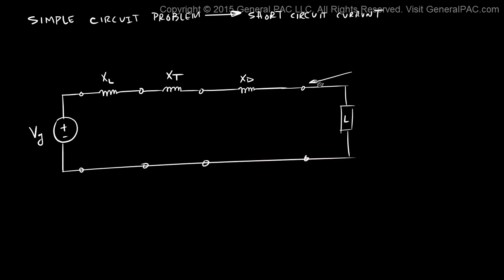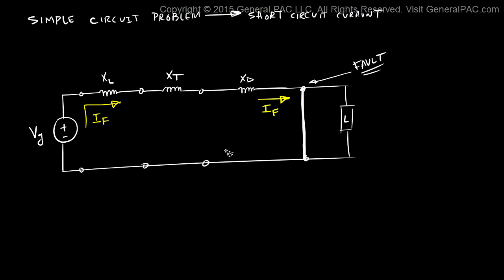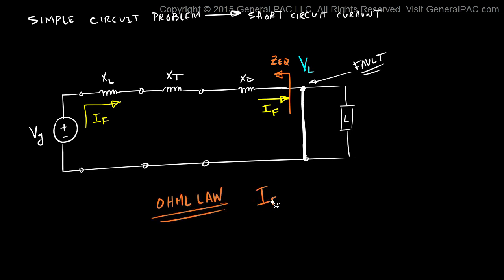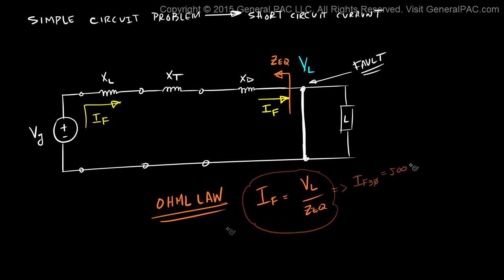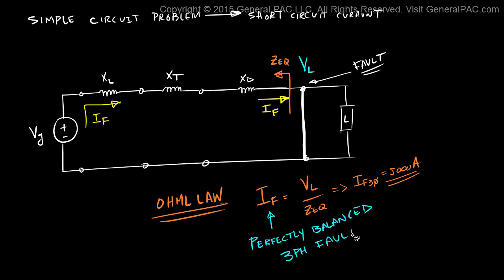Now if we had a fault at the terminal of our load — a short circuit — we should expect a huge short circuit current that comes from our generator and feeds our fault. To calculate this current, we take the voltage at the terminal of our load and divide by the equivalent impedance seen at the point of the fault. This is Ohm's law, plain and simple: current equals voltage over impedance. Suppose we get 5,000 amps of three-phase fault current. But we have simply calculated a perfectly balanced three-phase fault. How do we calculate an unbalanced fault, such as a line-to-ground, two-line-to-ground, or line-to-line fault with the same methodology?